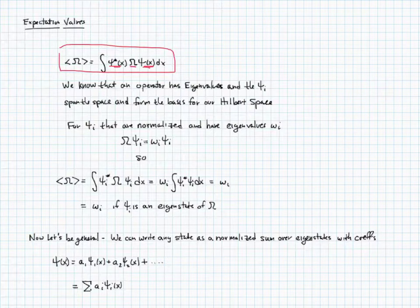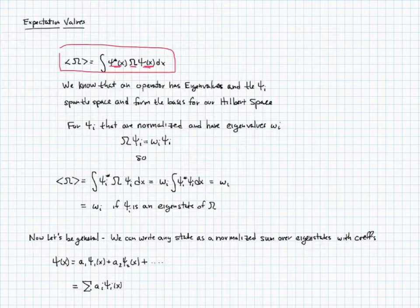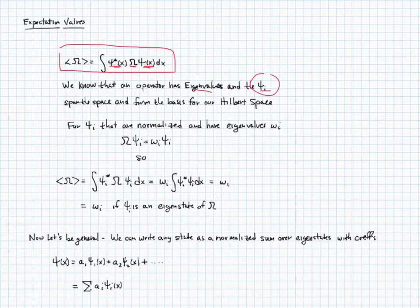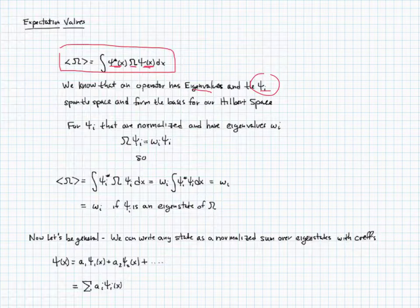Now there are some nice special cases when it turns out that those psis are already the eigenstate or eigenvector of the operator. So we know that the operators have eigenvalues, and that the psi i are the eigenvectors or eigenfunctions. They span the space. You can think of them as like directions in the Hilbert space. They form the basis of the Hilbert space. And they really do act a lot like i, j, k did in Physics 1. They give us directions, in this case in a Hilbert space.